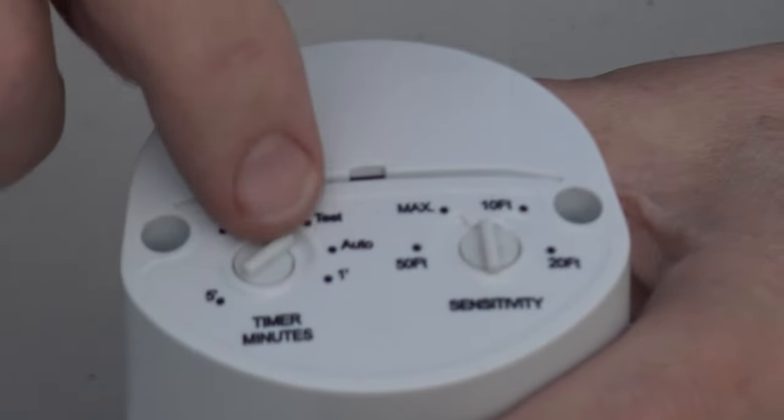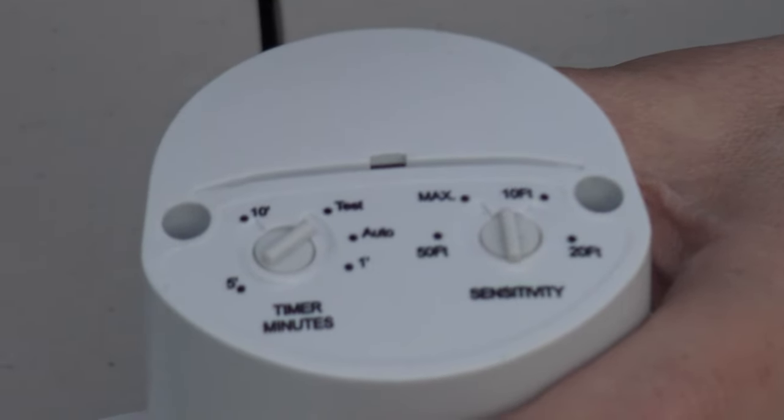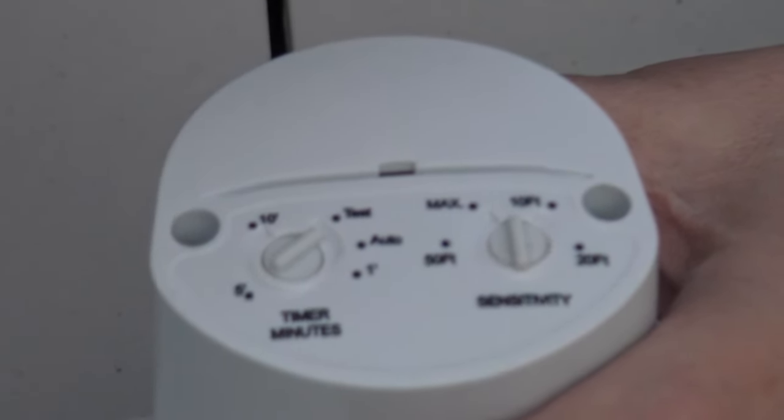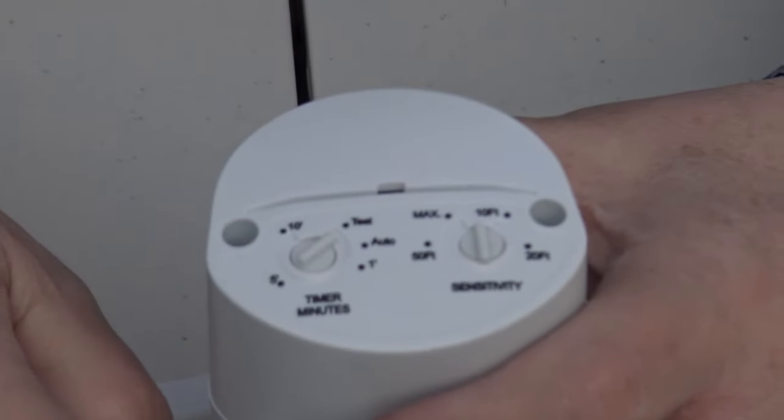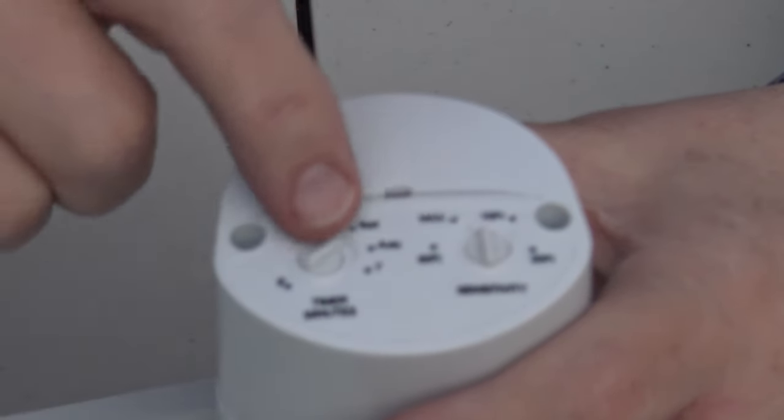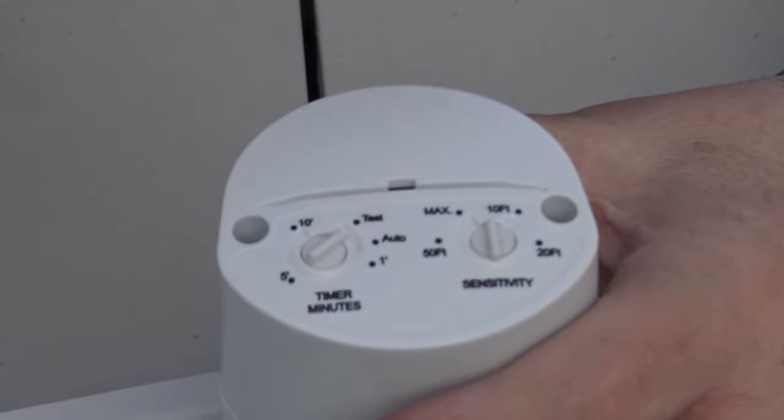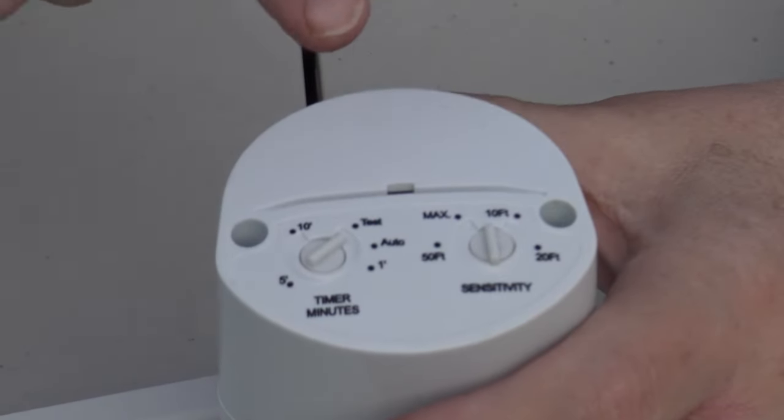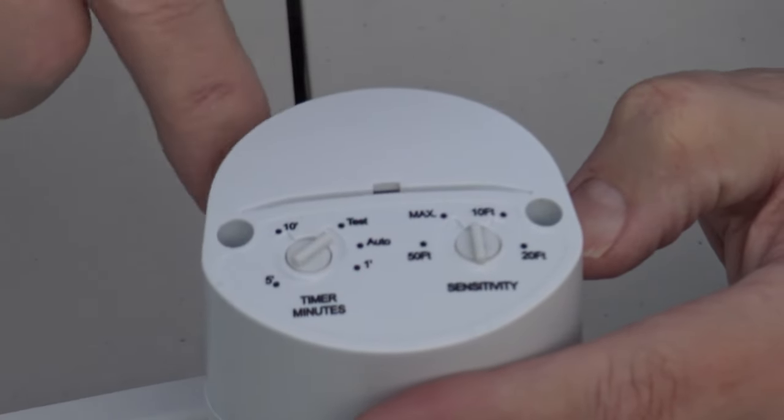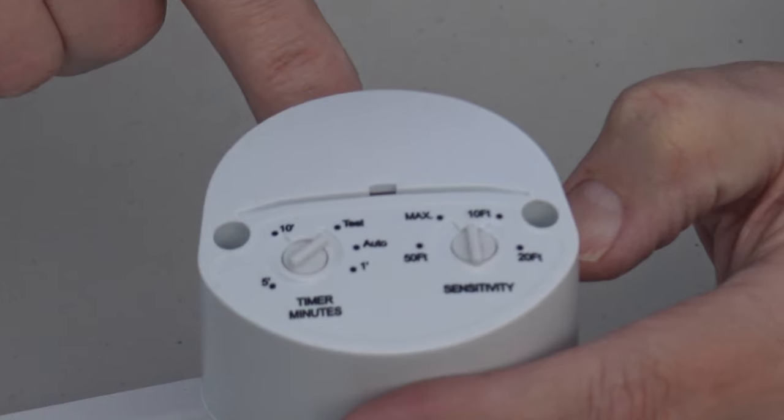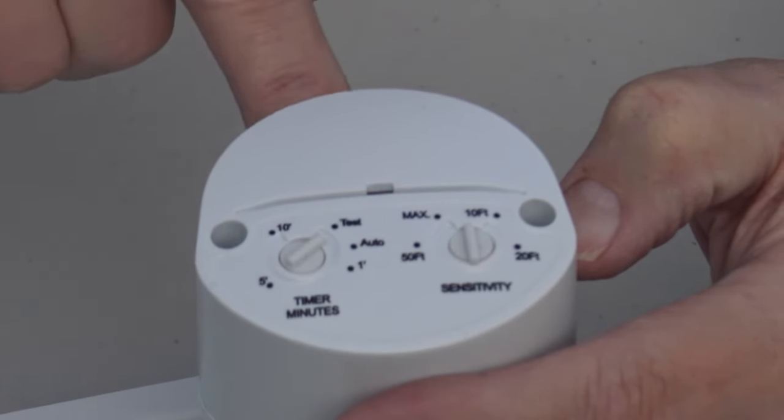When you set this to test and you turn on your power to the electrical box that controls the light, what the test mode allows you to do is essentially it disables the dusk to dawn control that's built into this. So normally during daylight hours...